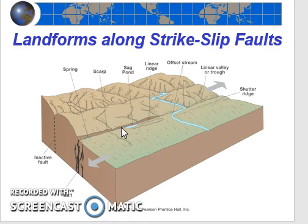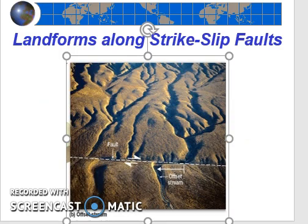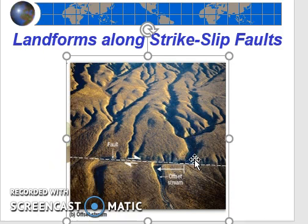Because you have a linear valley at a lower elevation, if it's a rainy climate, water might accumulate in those lower elevations. Sag ponds are ponds or lakes that form in the linear valleys as the water flows downhill. An offset stream is a stream that's been displaced laterally due to the horizontal movement along the fault. Study this diagram until you feel confident you understand these three landforms. Next, identify two of those features in this picture along the San Andreas Fault. Hopefully you can see the linear valley marked along the fault, and also the offset stream.